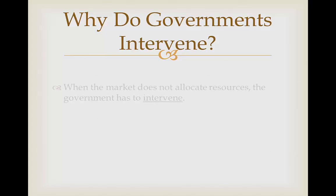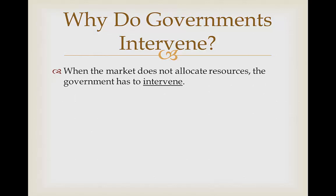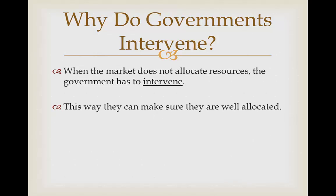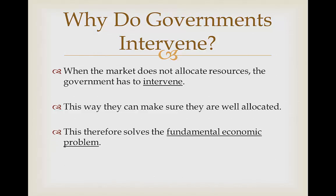Why do governments intervene? When the market doesn't allocate resources, the government has to intervene in order to get the appropriate allocation of resources. This way they can make sure that all of the resources are well allocated and everyone has desirable outcomes. This therefore solves the fundamental economic problem of limited resources but unlimited wants.